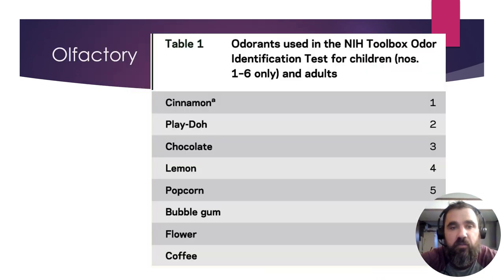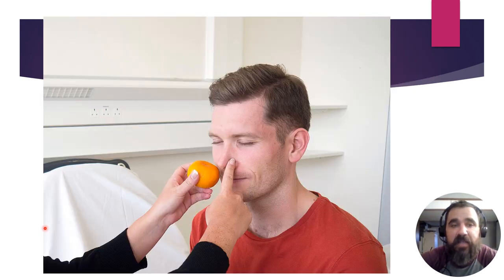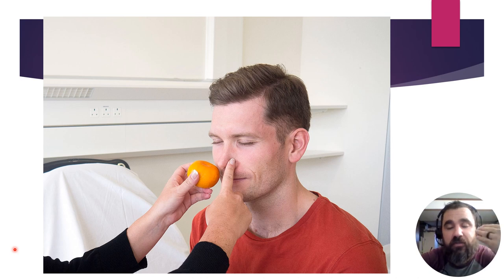Testing the olfactory nerve: common items like coffee, vanilla extract, or citrus fruit can be used, or a scratch-and-sniff card. You must test one nostril at a time since it's a bilateral nerve — close one nostril and have the patient close their eyes if using an identifiable object, to prevent visual identification. If using a scratch-and-sniff card where the scent can't be identified visually, eyes can remain open.